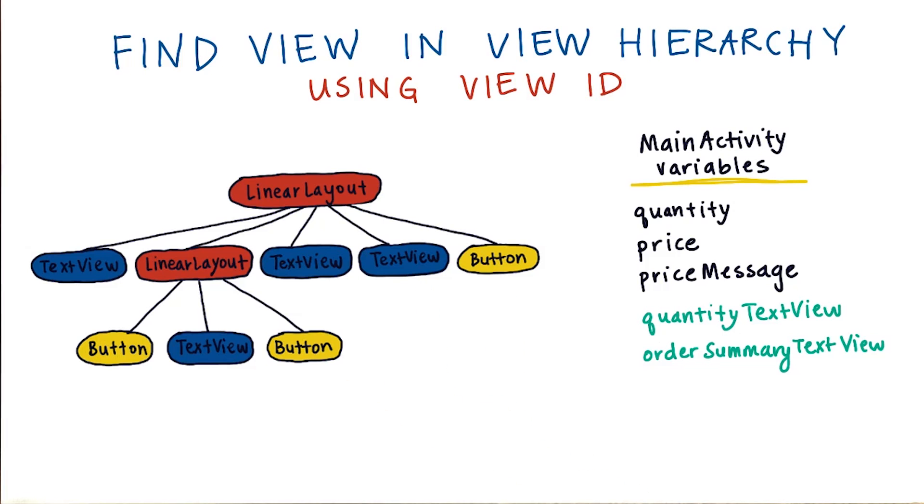When you click on the order button, then the order summary text view will change its text to show the new order summary. So you can see how having variables that point to some of these views would be useful for changing the UI when the app is running. But how do we make the connection between this variable here to this text view?